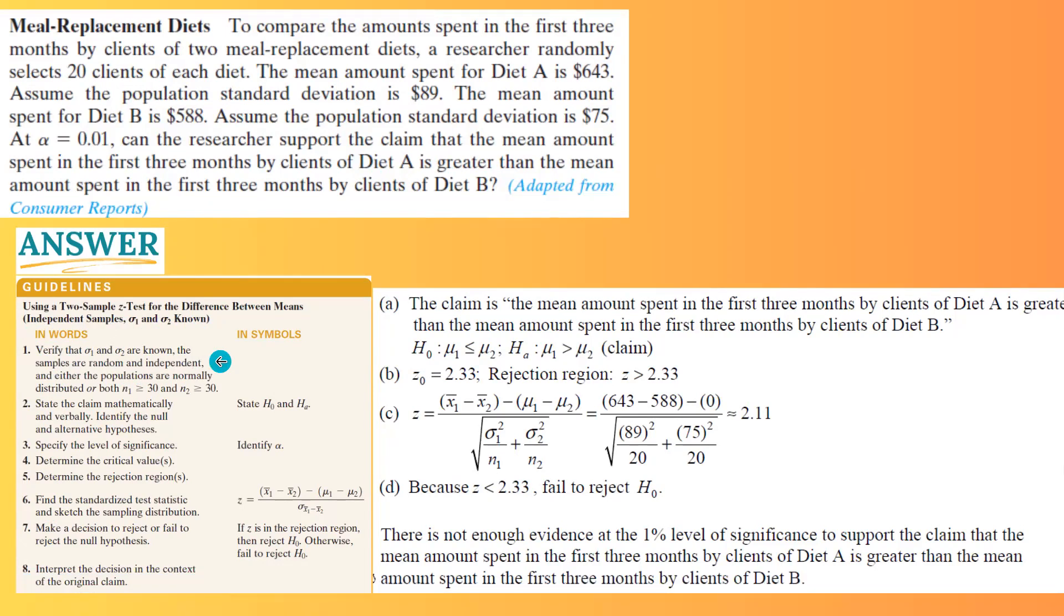Verify sigma 1 and sigma 2 are given. Let us go back to the question. For diet A, the average is 643 with standard deviation of 89 for the population. So we have sigma 1, 89. For the second population, we took a sample and the sample mean is 588 with the population standard deviation of $75. So sigma 1 and sigma 2 are given. We have a random selection and they are definitely independent from each other.